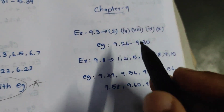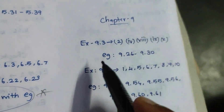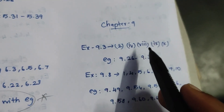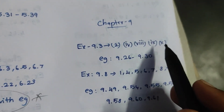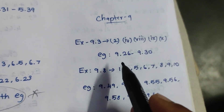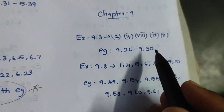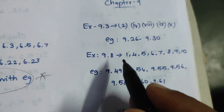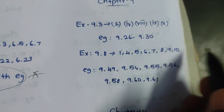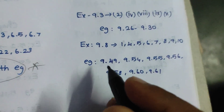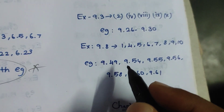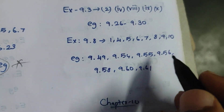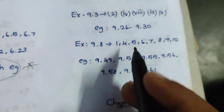Okay, the next chapter is 9.3 — 2nd, 4th, 8th, 9th, 10th. Example 9.26, 9.30. Exercise 9.8 — 1, 4, 5, 6, 7, 8, 9, 10. Example 9.49, 54, 55, 56, 58, 60, 61.